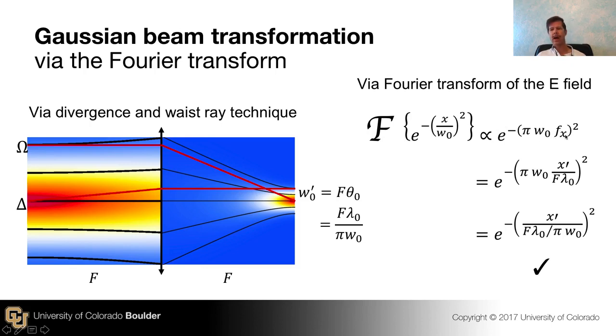So the spatial frequency related to this space, that transform is here. And notice the units are right. We have one over distance here and W0's in unit of distance. And so check, that's the Fourier transform of the field along here.